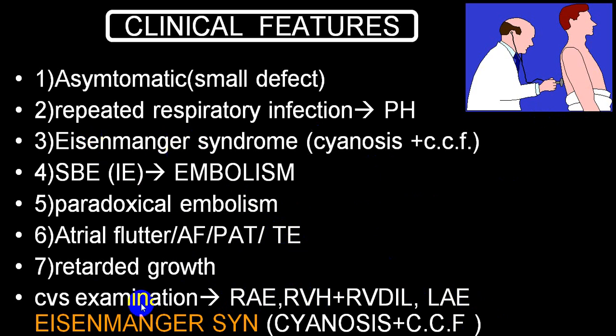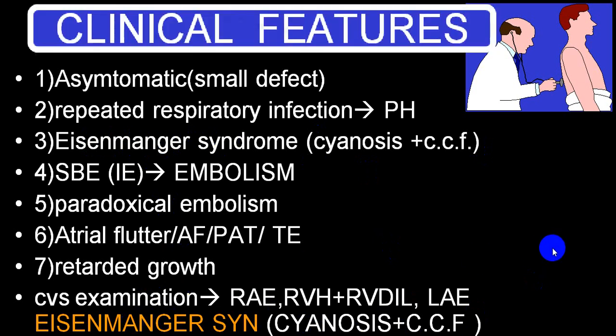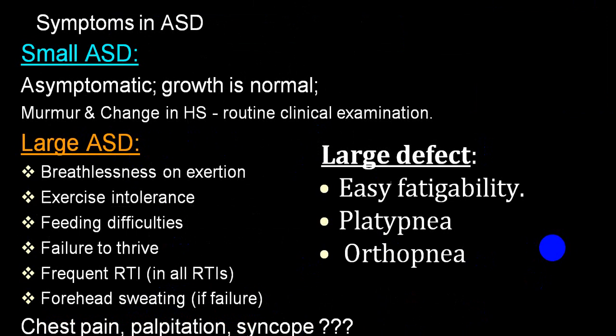Cardiovascular examination shows enlargement of the right atrium and right ventricular dilatation plus hypertrophy, with possibly a small amount of left atrial enlargement. In Eisenmenger syndrome the patient has cyanosis plus congestive cardiac failure. Small ASDs are asymptomatic while large ASDs present with shortness of breath on exertion, exercise intolerance, feeding difficulty, failure to thrive, frequent respiratory tract infections, overhead sweating, chest pain, palpitations, and syncope. Large defects cause easy fatigability, platypnea, and orthopnea.